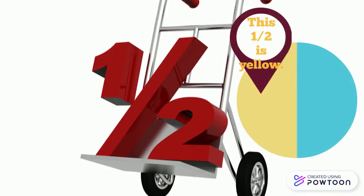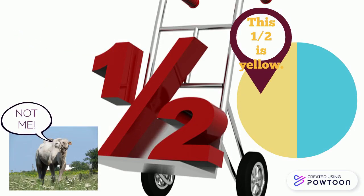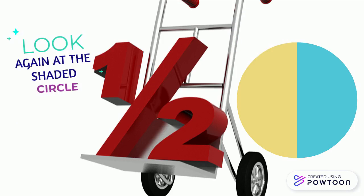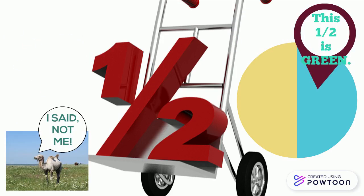Look at the shaded circle. This half is yellow. Look again at the shaded circle. This half is green.